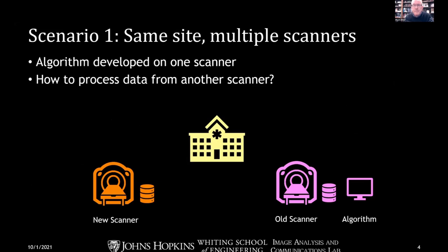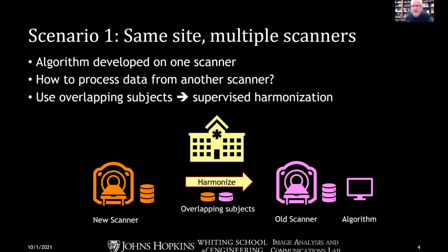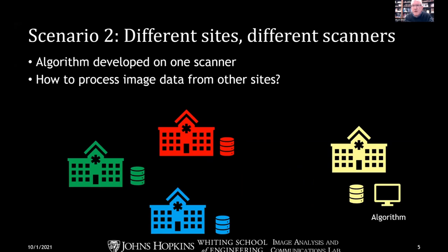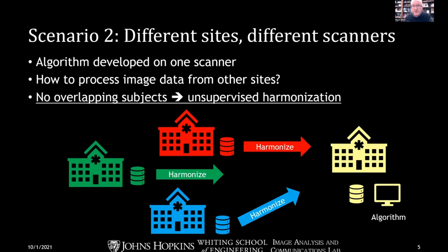The scenarios where you might use harmonization include: a single site where you have a new scanner, an algorithm designed for the old scanner, and you want to use data from the new scanner. In this case, you might have overlapping subjects scanned on both scanners and use supervised harmonization in a straightforward deep network training application. A more difficult scenario is when you have multiple scanners and no overlapping subjects — no traveling subjects — so you have to resort to unsupervised harmonization.